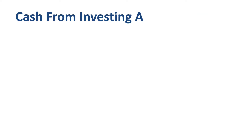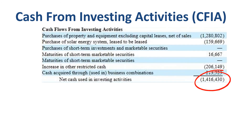Time to move to the next section: cash from investing activities, a net cash outflow of $1.4 billion. This is fairly easy to explain — almost the whole category consists of purchases of property and equipment. Factory construction is on track to support the expected growth in vehicle production and deliveries.